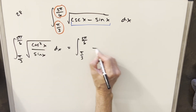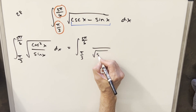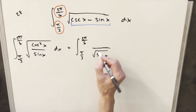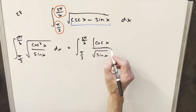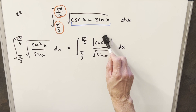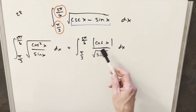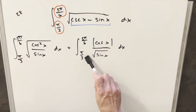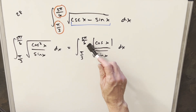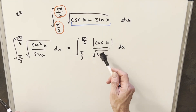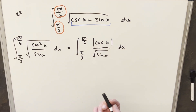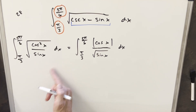From here I can separate the numerator and denominator: the denominator is just the square root of sine x, and taking the square root of cosine squared x, we have to be careful because technically this should be the absolute value of cosine x. In many cases we'd drop the absolute value, but we need to check the sign. Cosine is positive in quadrant one, from π/3 to π/2, but 5π/6 goes into the second quadrant where cosine is negative. So we really can't drop the absolute value — we need to leave it.